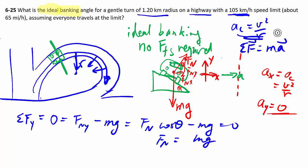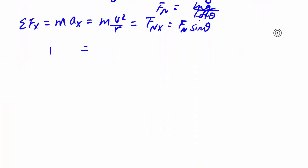fn is mg divided by cosine theta. Then move on to sum of forces in x equals max, which is mv squared over r. The only force we have in the x direction is fn x which is fn sine theta.